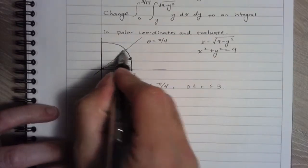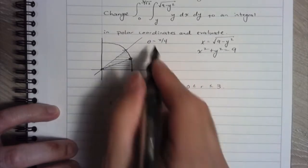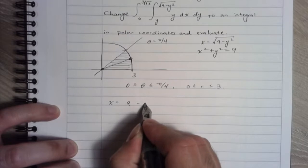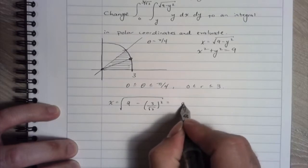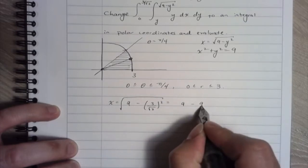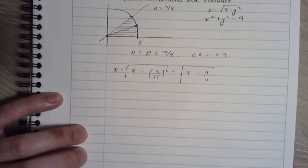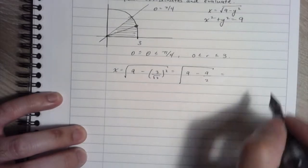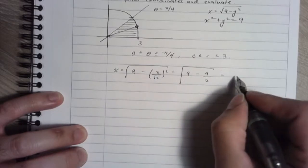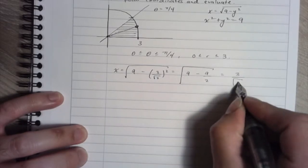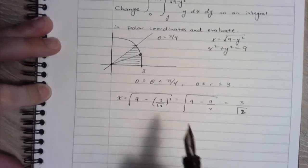All right, so let's just check that this is the right place. So if I plug in root 3 over root 2 for y here, I get the square root of 9 minus 9 over 2, but 9 minus 9 over 2 is surely 9 over 2. So this is, again, root 9 over 2, or since it's the square root of 9 over 2, 3 over root 2. All right, so this is the right place.